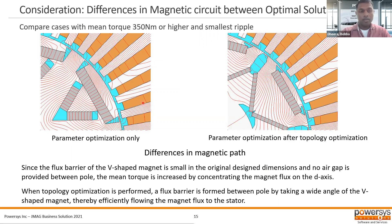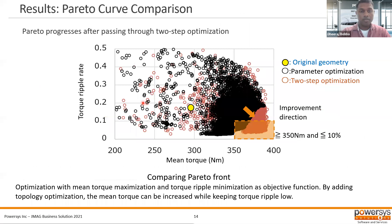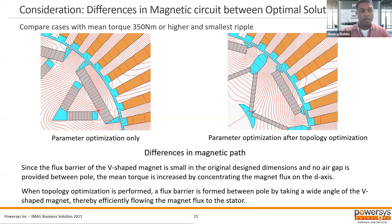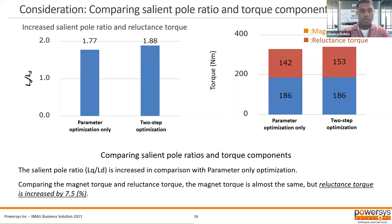Here we're looking at two examples on the Pareto front for both optimization steps — one from the black and one from the orange Pareto curve. We can see that the geometry is quite different, specifically the distribution of this V-shaped magnet. It's much wider here, and the flux barriers for the Q-axis is not well-defined. Here we have a really good bridge shape that focuses the flux all the way in the D-axis to the stator. The saliency of the machine is increased by the two-step optimization from 1.77 to 1.88, and the two-step optimization produced 7.5% more reluctance torque.